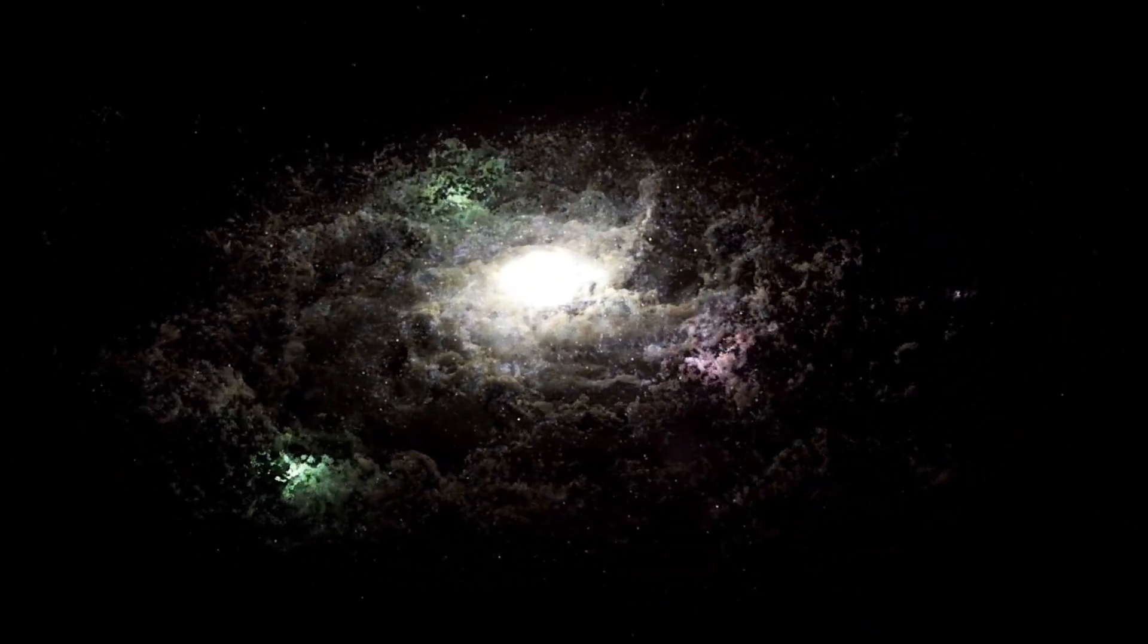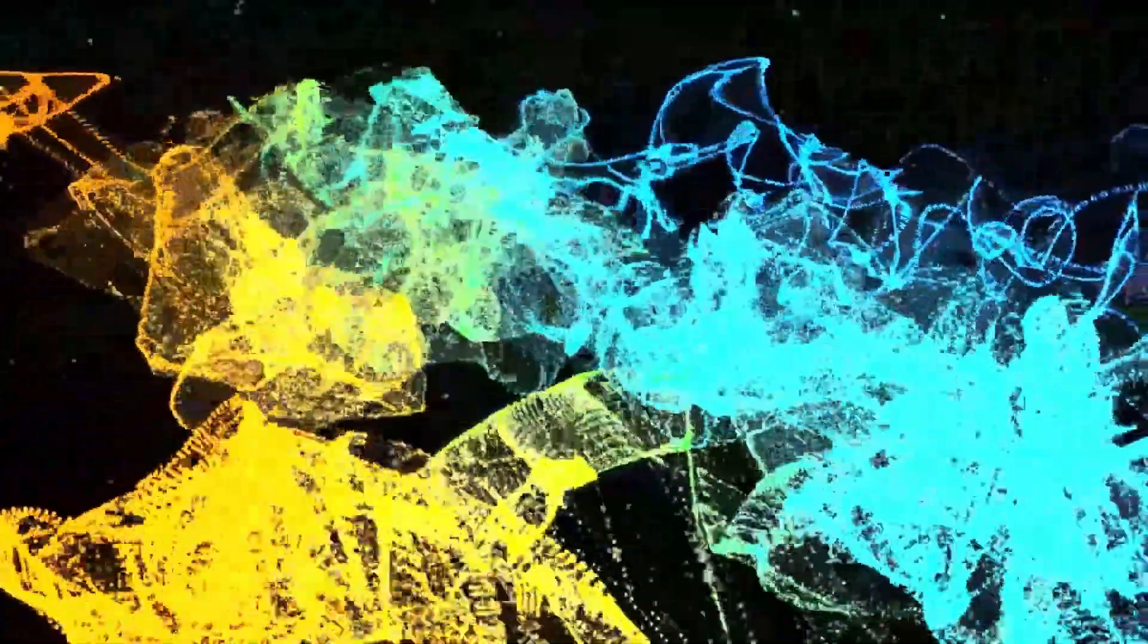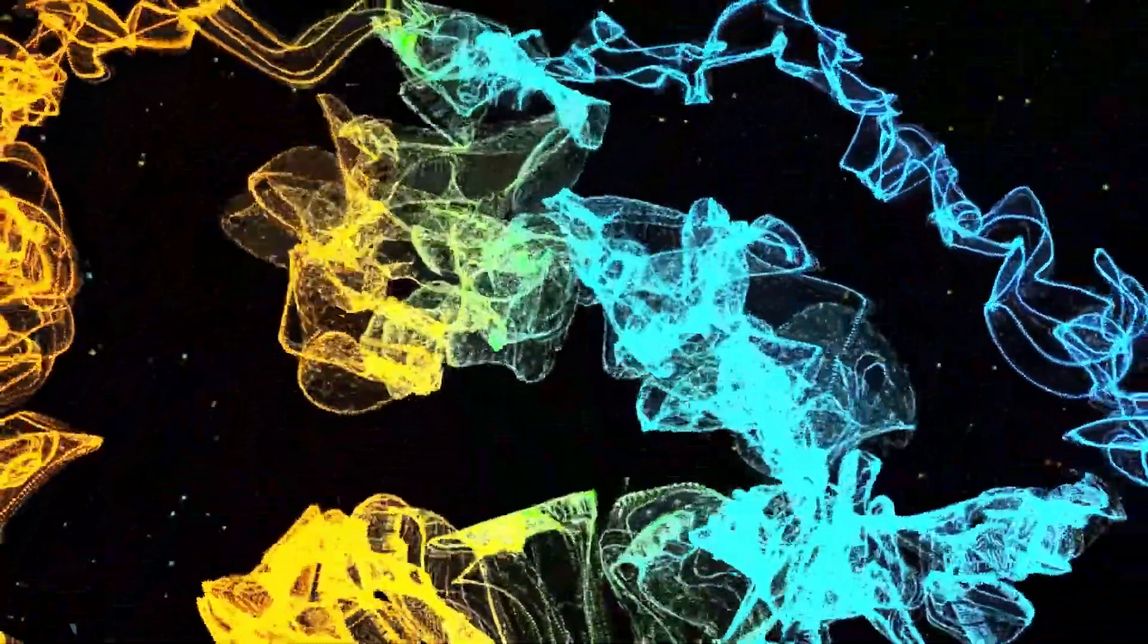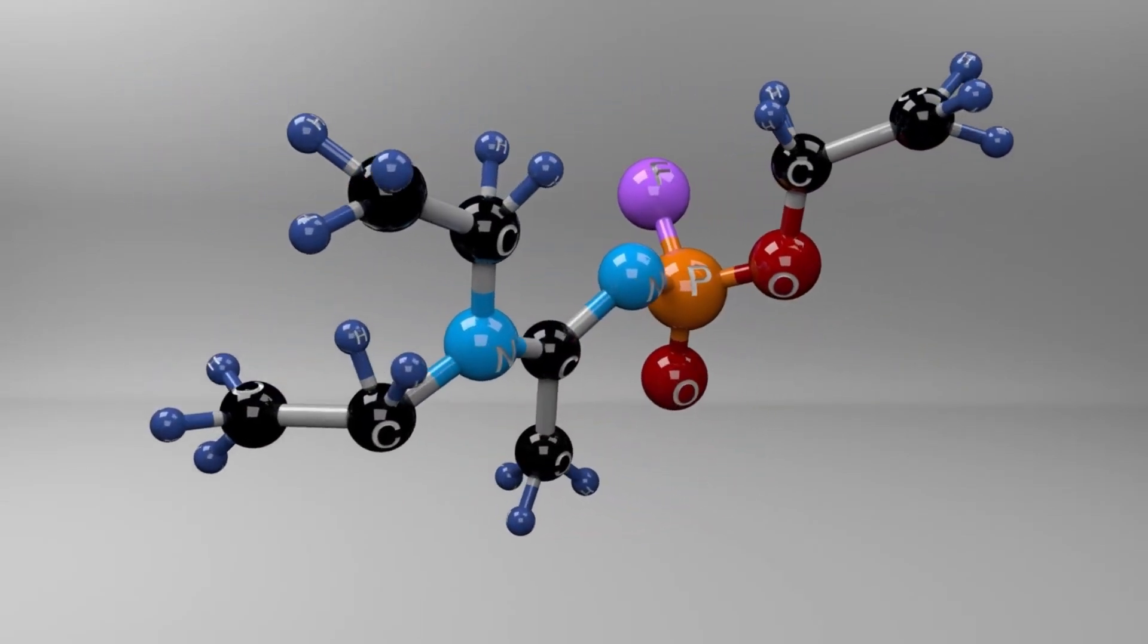The planet's radius, which is estimated to be 2.6 times that of Earth, implies that it likely possesses a core enveloped by a high-pressure mantle of ice, much like Neptune in our own solar system. Moreover, it is surrounded by a thinner hydrogen-rich atmosphere and, quite possibly, an ocean-covered surface.